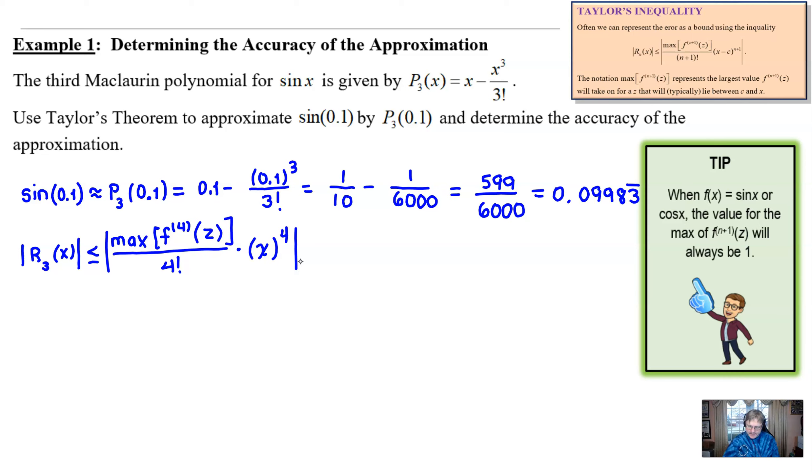And we can now evaluate. So, let's just do that right now. Here we are. The maximum of the fourth derivative. Okay. Well, let's think about that. If I take my function, sine of x, let's take four derivatives. We don't even have to write them down. First derivative, cosine. Second derivative, negative sine. Third derivative, negative cosine. Fourth derivative, I think we go right back to sine. Okay. What is the maximum value that the sine would acquire at some z where z is between?